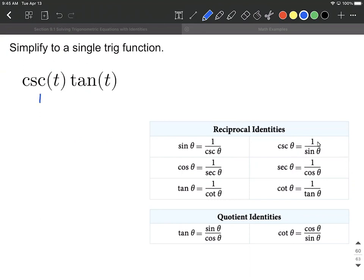So I'm going to replace this with 1 over sine of t and then for tangent we're going to replace that using a quotient identity as sine over cosine. So sine of t over cosine of t.